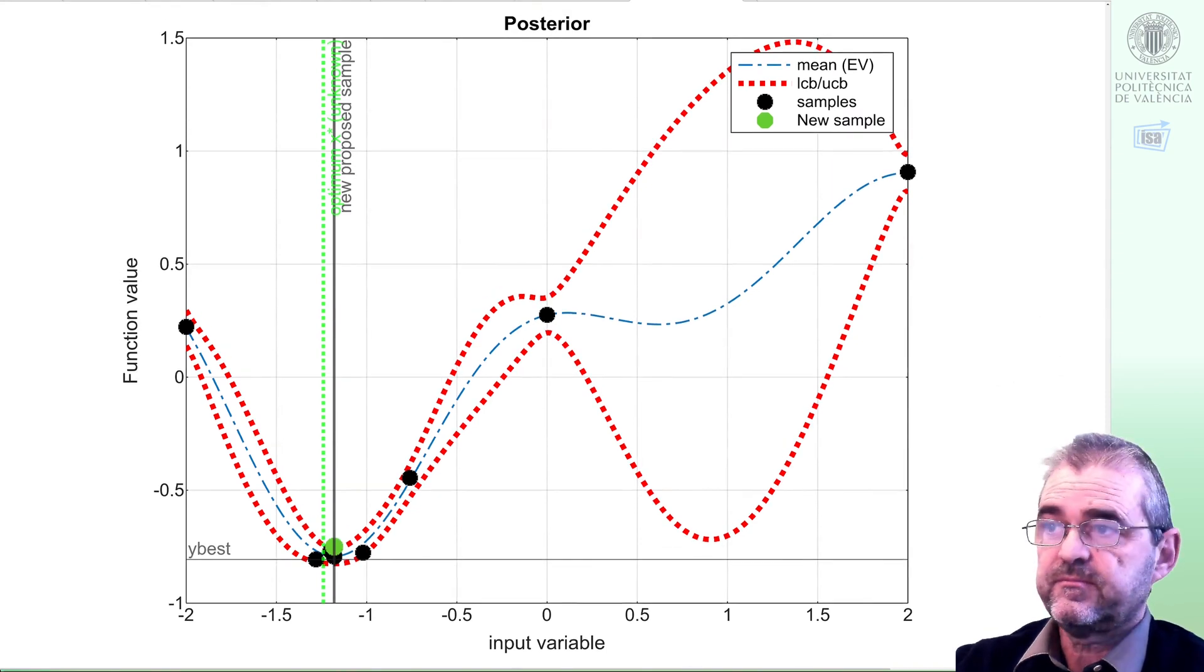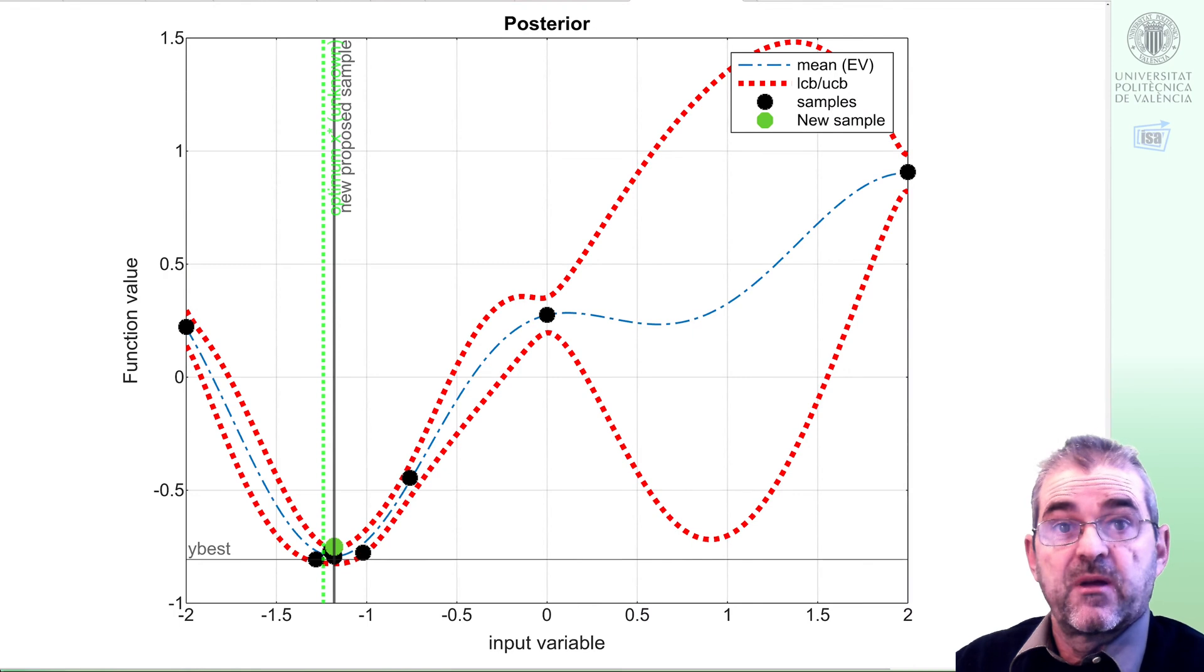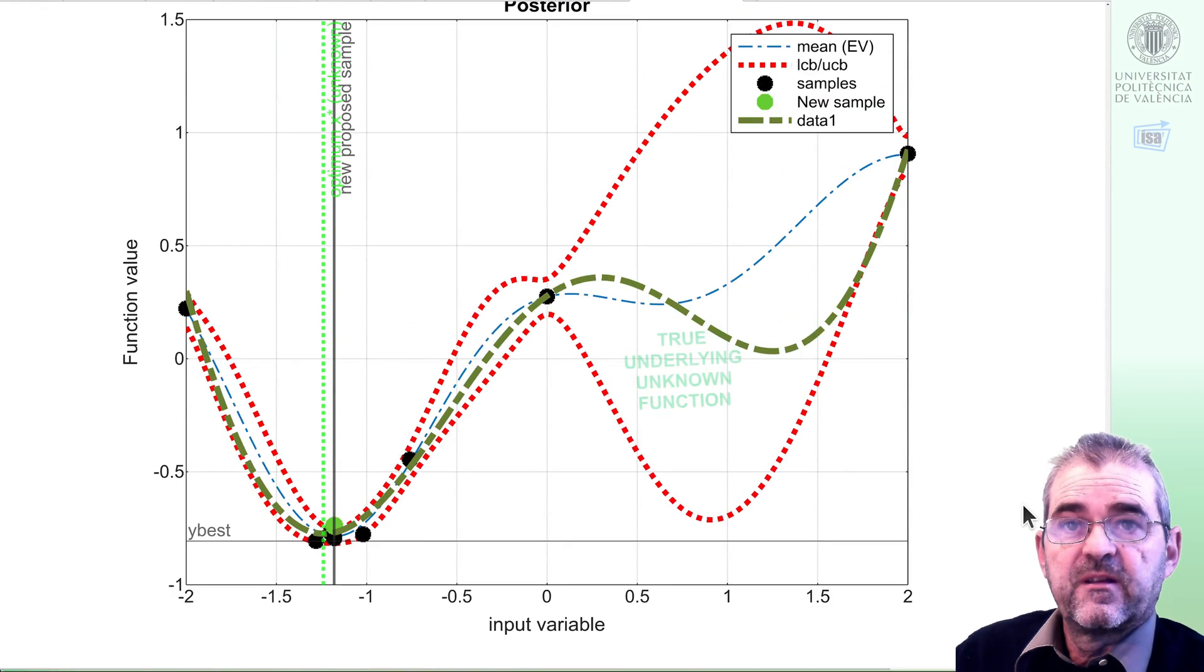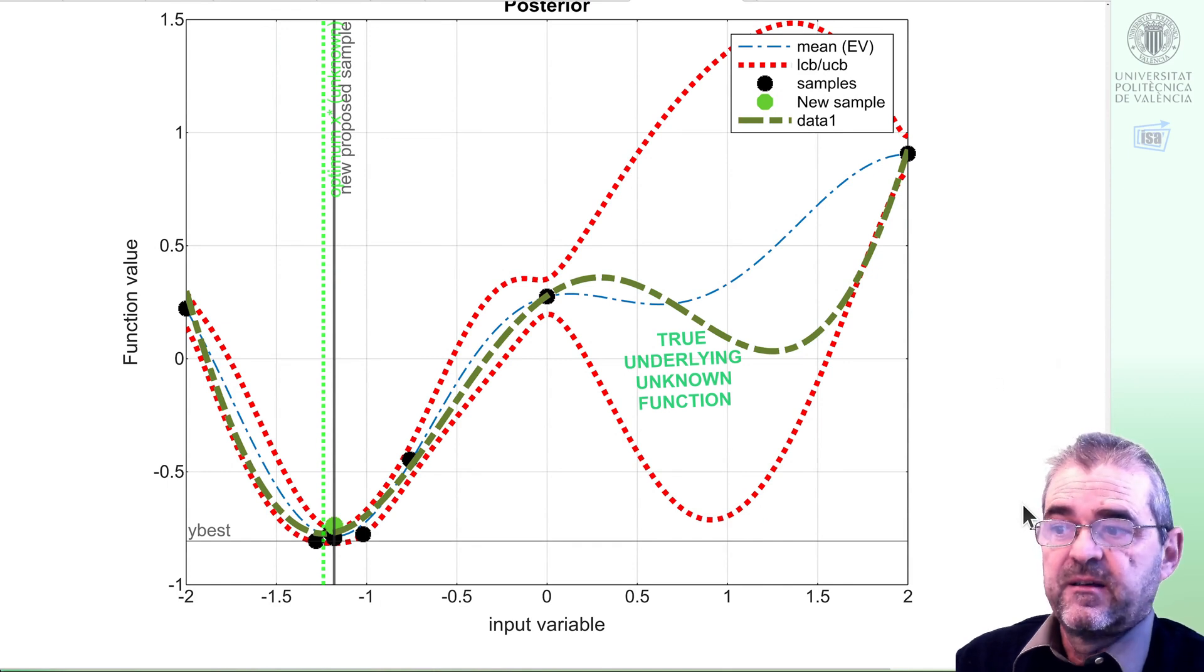Another sample. And well, as I am god of everything and I know the true function, I can now reveal the ground truth. Here we have it, this thick olive green line. And it seems that, indeed, up to some measurement noise, we correctly guessed the global optimum of the green line, which was, of course, unknown to my algorithm, until I revealed it for didactical purposes.